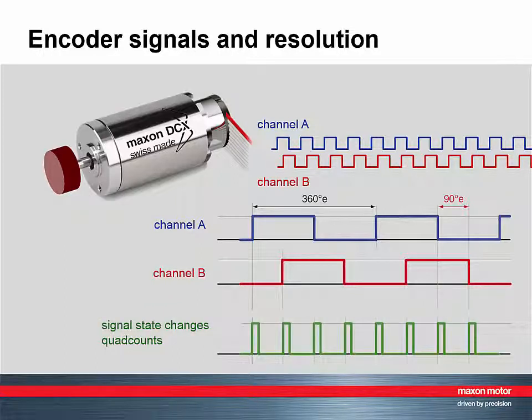The actual resolution is four times higher because there are four states per signal period. These are called quad counts or often referred to as lines per turn. However, the wording is somewhat ambiguous and when talking about resolution you have to make sure whether it is meant before or after quadrature.